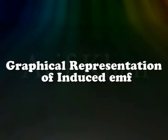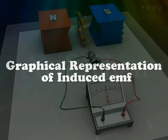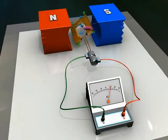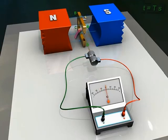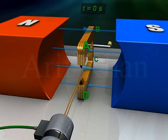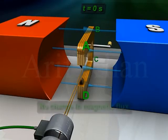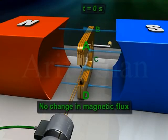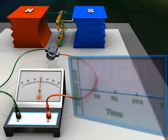For a graphical representation of the induced EMF: suppose the armature takes T seconds to complete one rotation clockwise. At time t equals zero, the armature ABCD is vertical with arm AB up and arm CD down. At this position, the rate of change of magnetic flux is momentarily zero, hence the induced EMF is zero.